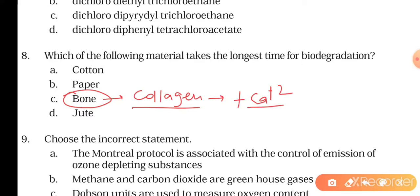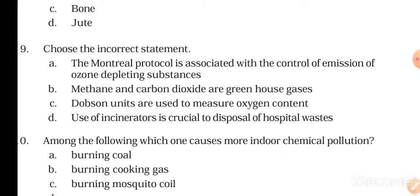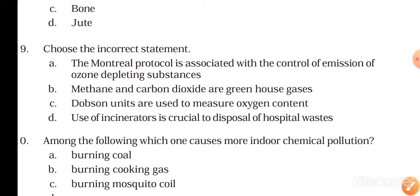Choose the incorrect statement. We need to see which statement is incorrect. The first option is: the Montreal Protocol is associated with the control of emission of ozone depleting substances. This is correct because the Montreal Protocol was signed in 1987 to control ozone depleting substances and it was implemented in 1989. So the first option is correct. Coming to the second option: methane and carbon dioxide are greenhouse gases.